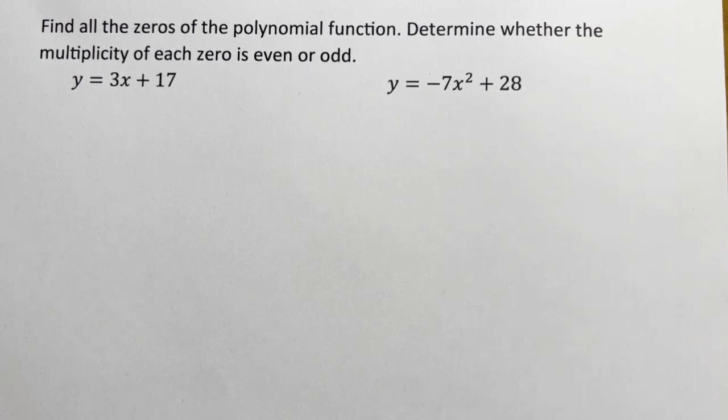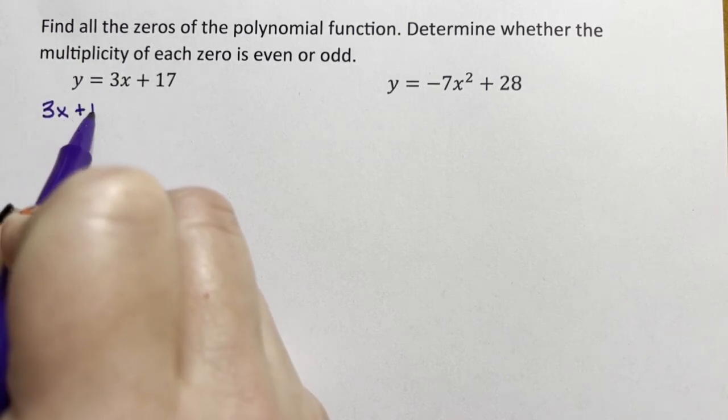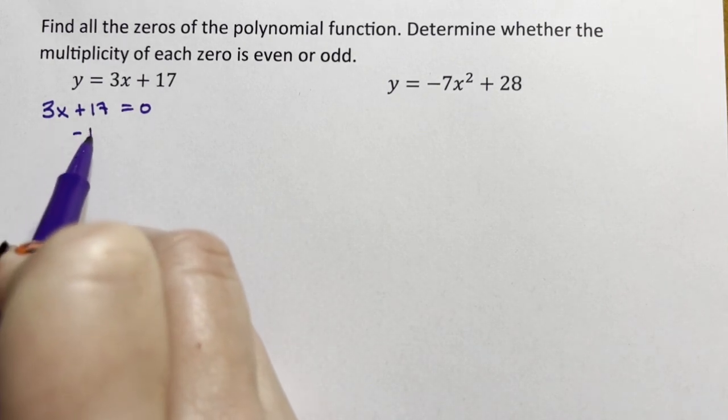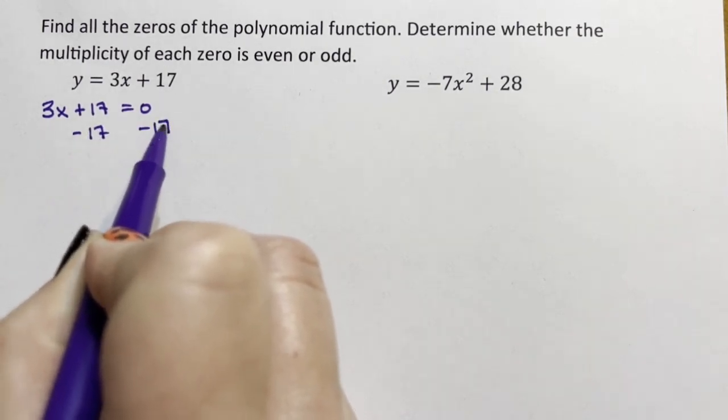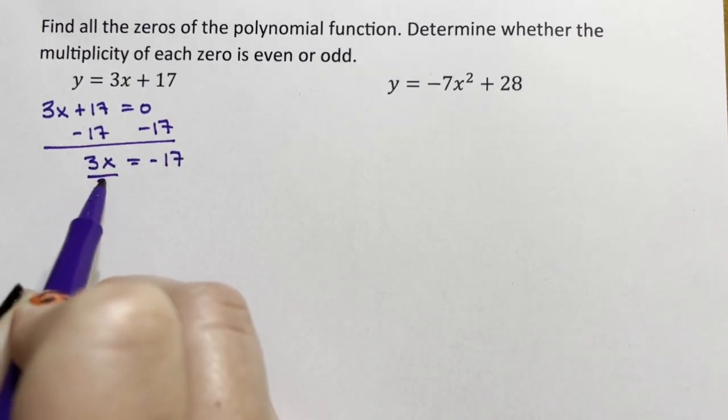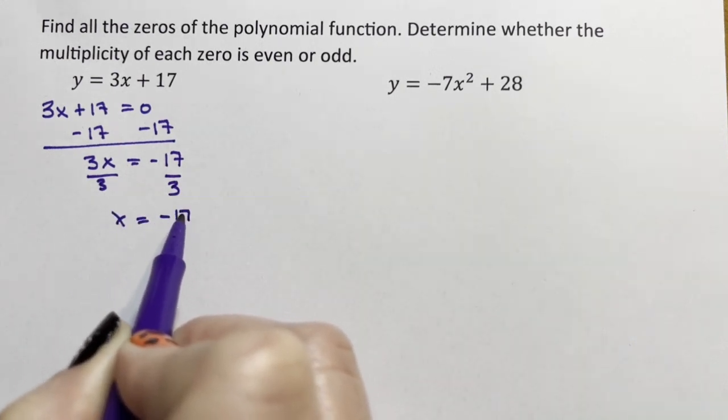Okay, so for this first one, we set 3x plus 17 equal to zero. Subtract 17 over, 3x equals negative 17. Divide, and x is equal to negative 17 thirds.